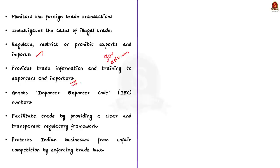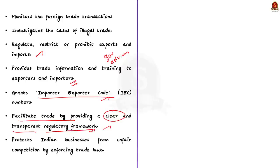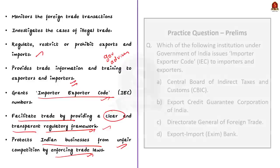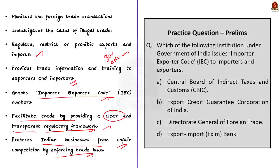The DGFT has specific functions like providing importer-exporter code numbers, which are mandatory for carrying out import-export trade operations by Indians. Finally, the DGFT helps to facilitate trade by providing a clear and transparent regulatory framework. It also helps to protect Indian businesses from unfair competition by enforcing trade laws. In this discussion, we saw a few details about the DGFT.